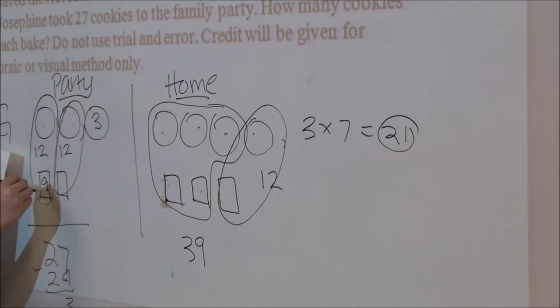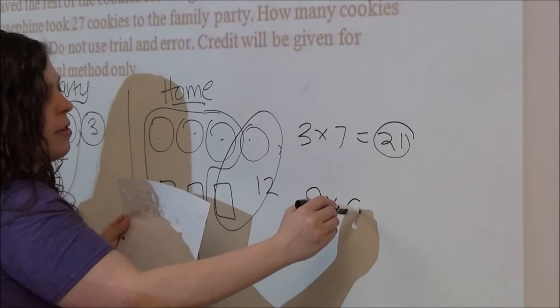Three times seven of Geraldine's parts is 21. If one circle and one square was 12, the circle was three, so the square must be nine. There are five parts of Josephine's. Nine times five is 45.